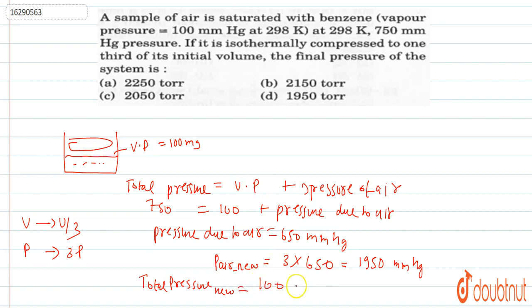Total new pressure will be 100 plus 1950, which equals 2050 mmHg. C is the correct answer.